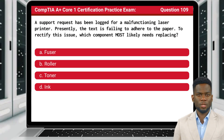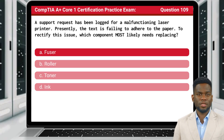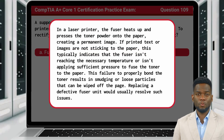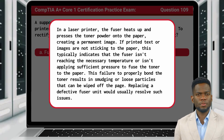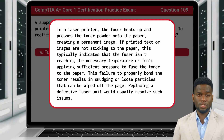Question 109: A support request has been logged for a malfunctioning laser printer. Presently, the text is failing to adhere to the paper. To rectify this issue, which component most likely needs replacing? The answer is A: Fuser. In a laser printer, the fuser heats up and presses the toner powder onto the paper, creating a permanent image. If printed text or images are not sticking to the paper, this typically indicates the fuser isn't reaching the necessary temperature or isn't applying sufficient pressure. This results in smudging or loose particles that can be wiped off the page; replacing a defective fuser unit would usually resolve such issues.